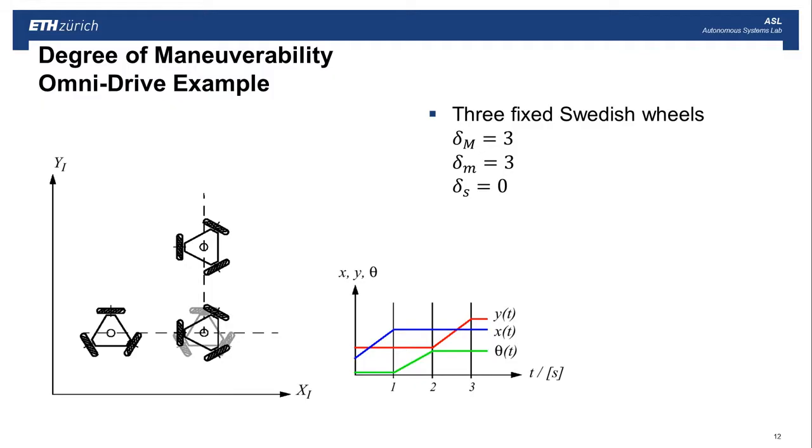And I'll just show that with a quick example here. So here's an example where a robot moves along the x-axis, then it changes its orientation, and finally it moves along the y-axis. And so if you have this robot, which is an omnidrive example, so it has three Swedish wheels attached in a triangular configuration. It's a holonomic robot, and it's truly instantaneously able to do these sets of motions. So first it does the x-direction, then it turns, and then it moves in the y-direction. And this of course has a degree of maneuverability 3.